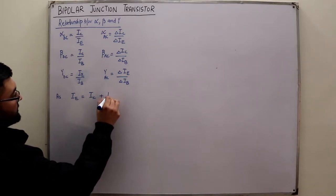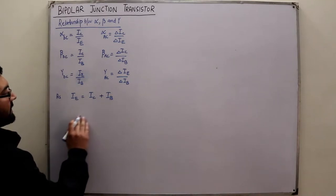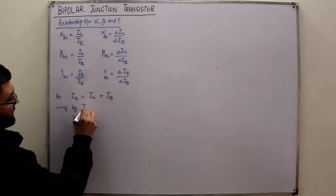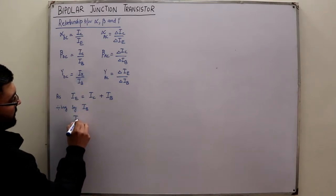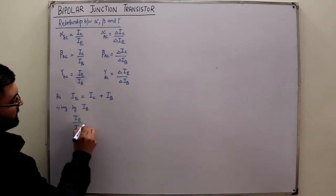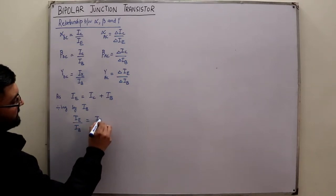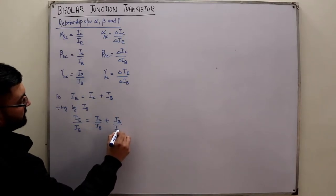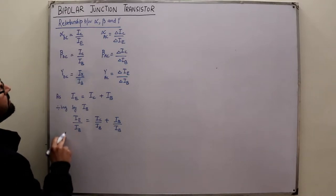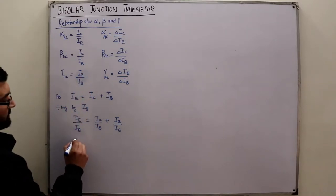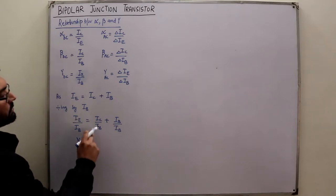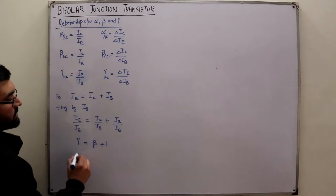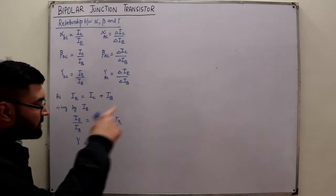We know that IE equals IC plus IB. Dividing all sides by IB: IE/IB equals IC/IB plus IB/IB. So IE/IB is gamma, IC/IB is beta, and IB/IB is 1. Therefore, gamma equals beta plus 1.